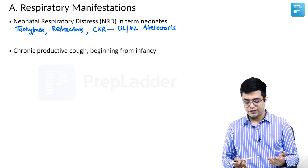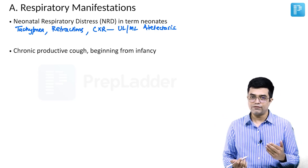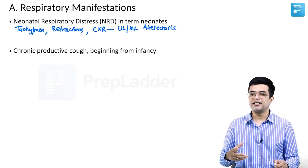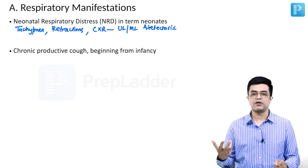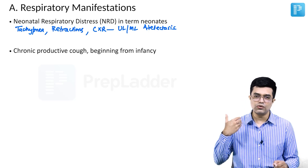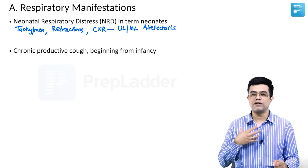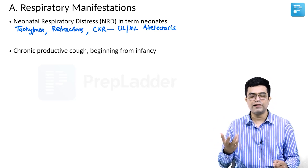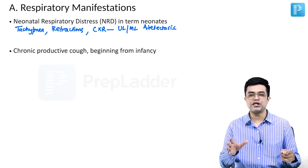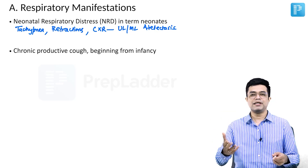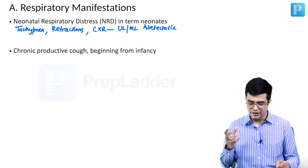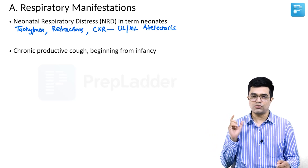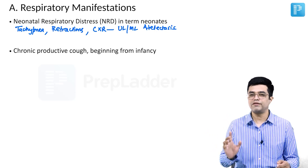Then we have chronic productive cough beginning from infancy — right from the first year of life. When we say chronic, the child is always coughing with production. The child may not be able to produce sputum, but parents will report noisy breathing. On auscultation, you will find bilateral conducted sounds that change after steam inhalation or position change — soft clues of productive cough from infancy.